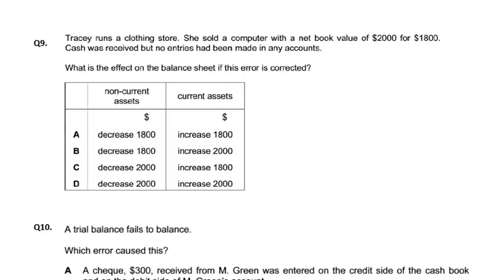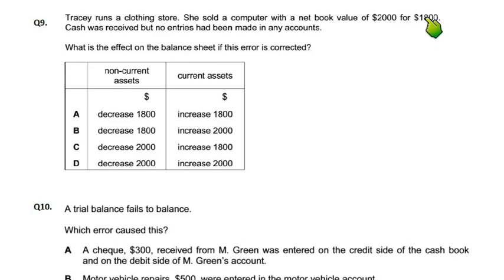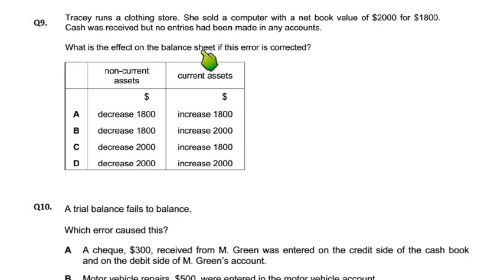Let's talk about question number 9. In the question, Tracy runs a clothing store. She sold a computer with a book value of $2,000 for $1,800. Cash was received but no entry had been made in the accounts. What is the effect on the balance sheet if this error is corrected?